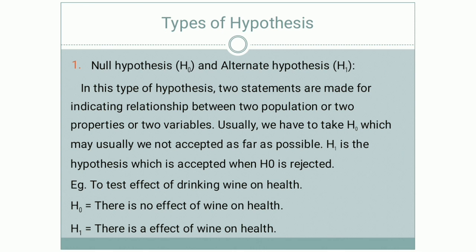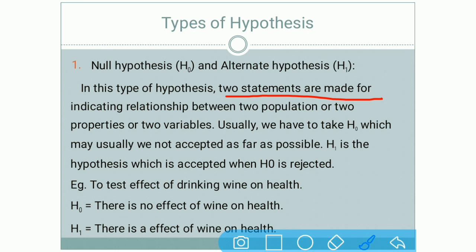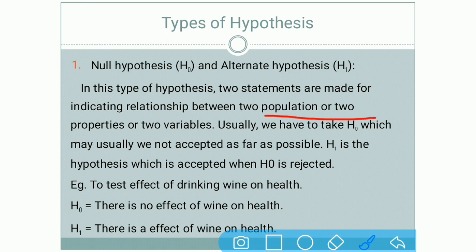H1 is the hypothesis which is accepted when H0 is rejected. Two statements are made together — we do not make just one assumption but two statement assumptions. These two statements indicate a relationship with each other. This relationship can be between two populations, two properties, or two variables.